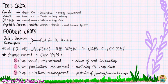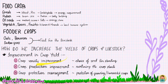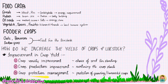On page 2, we discuss another type of crops — food and fodder. Fodder deals with the food for livestock and food crops are for us. Now the thing is that we can't increase area, but how can we increase the yields of crops? We can do this by three methods: crop variety improvement, crop production improvement, and crop protection management.